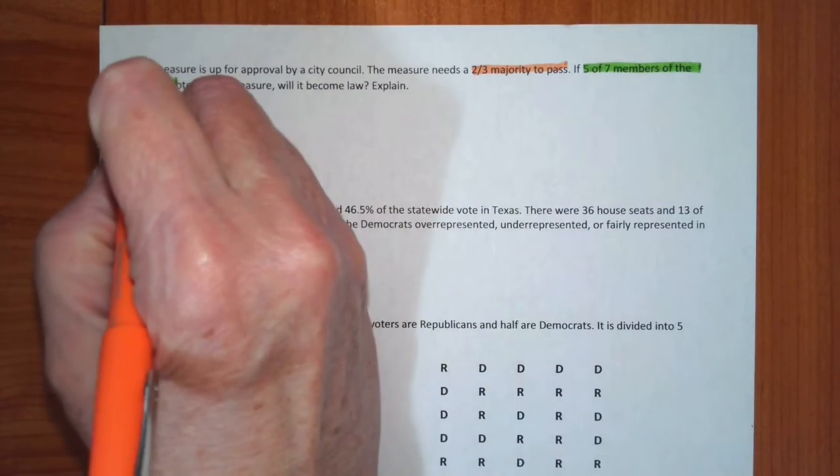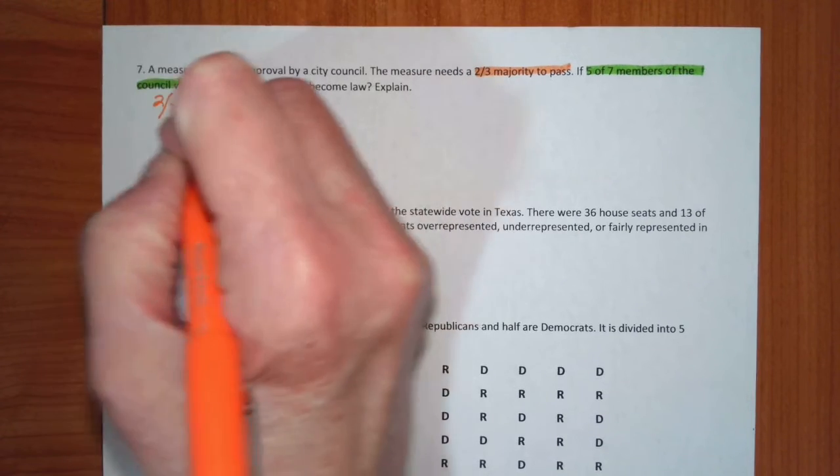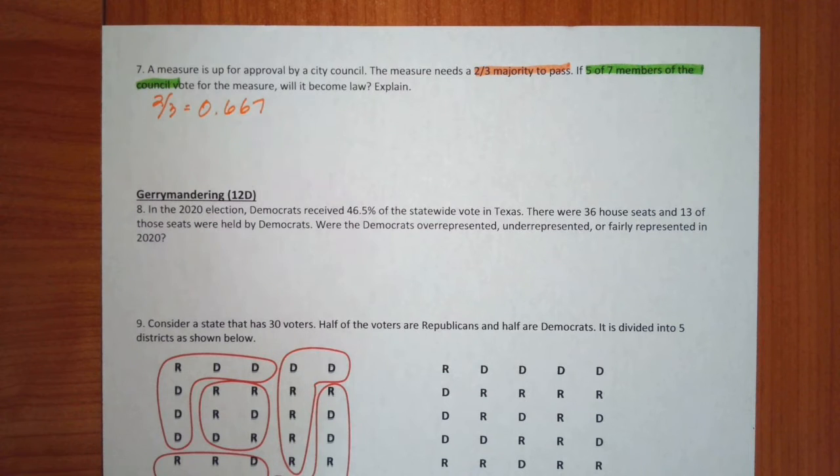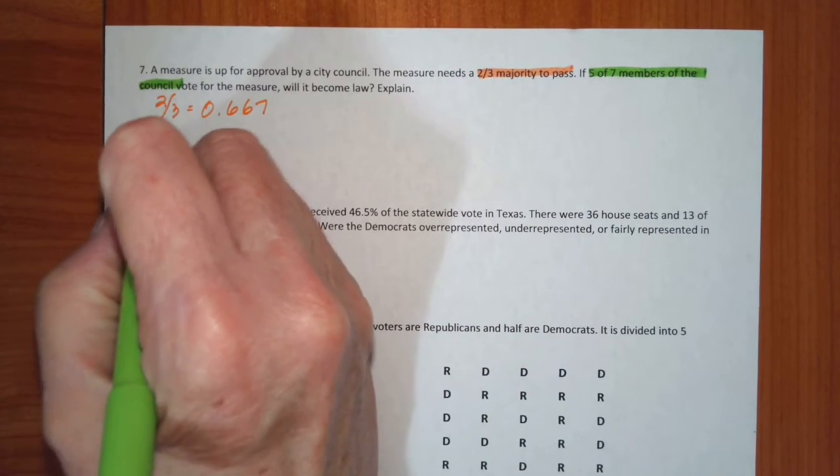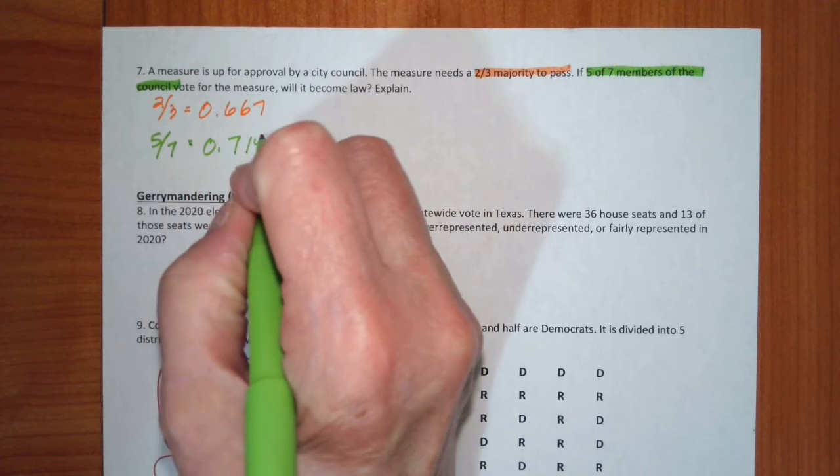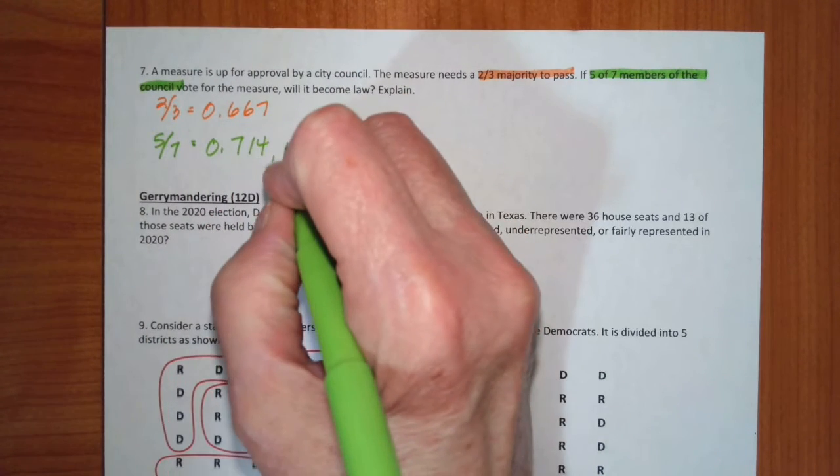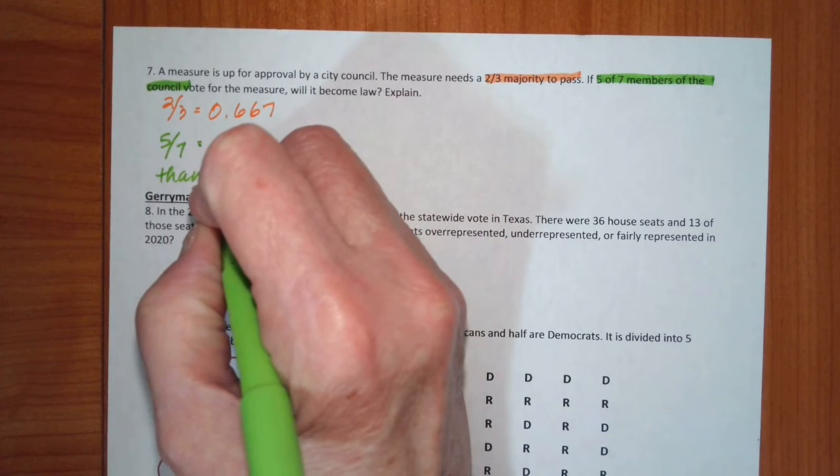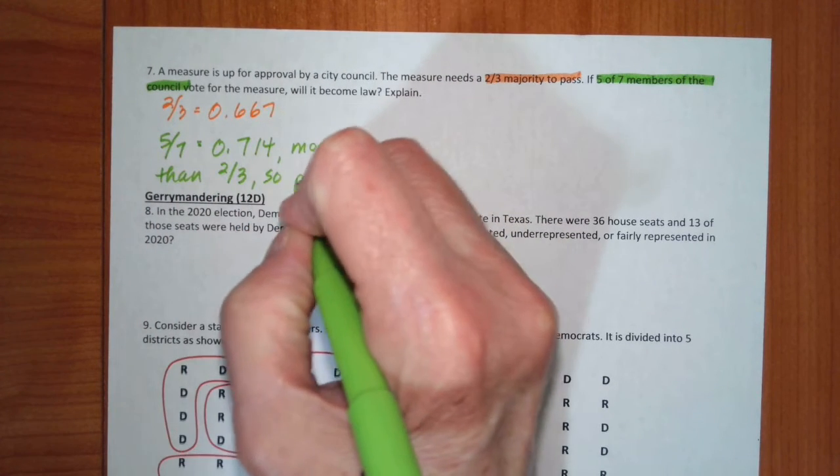I can say, alright, well, two-thirds is equal to 0.667. Then I can also say, well, five out of seven members is five over seven, which is 0.714, which is more than two-thirds. So it passes.